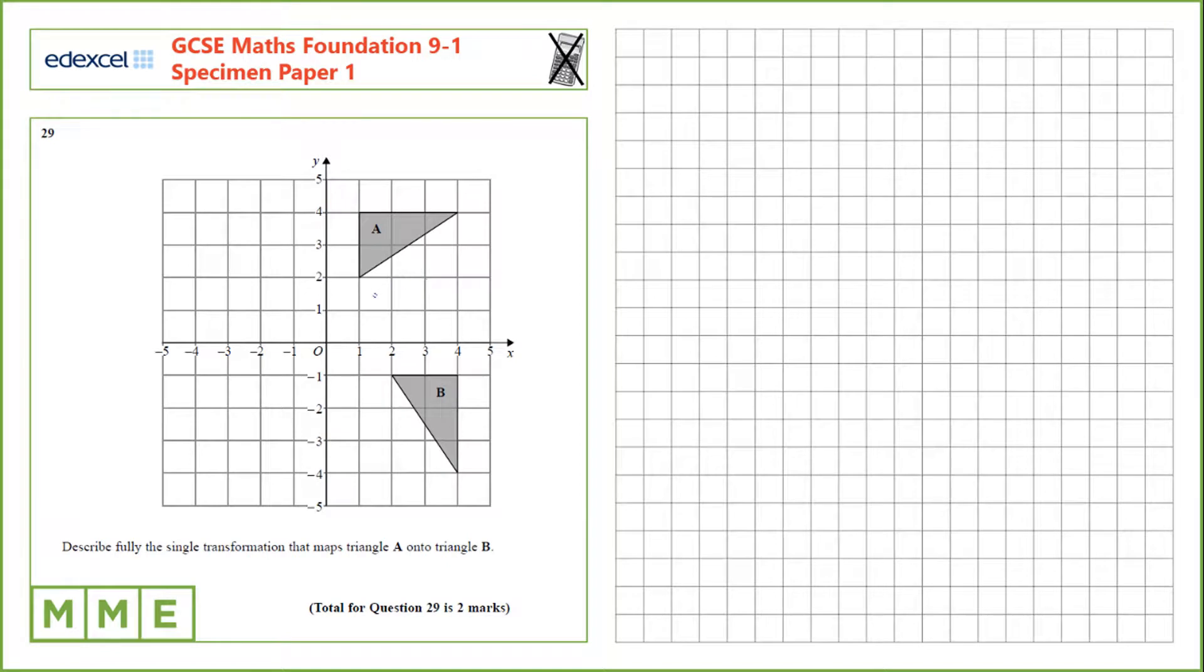Question 29. Describe fully the single transformation that maps triangle A onto triangle B.